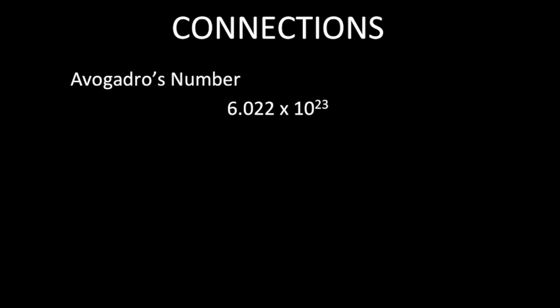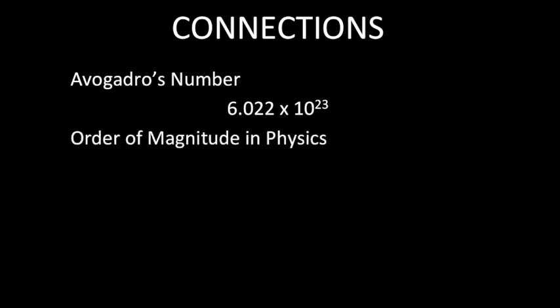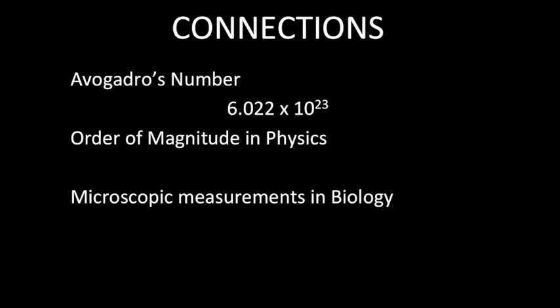Standard form links to other subjects. In chemistry, we have Avogadro's number, which refers to the number of particles, molecules, ions, or atoms contained in one mole. In physics, you have the order of magnitude. In biology, you have microscopic measurements — those are very small numbers. And in astronomy, we have very large distances measured in light years. So standard form is connected to many different fields and subjects.